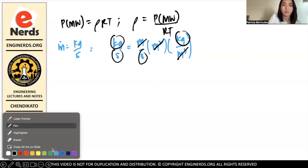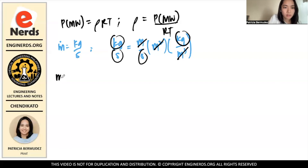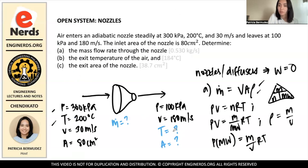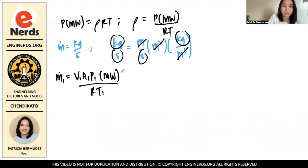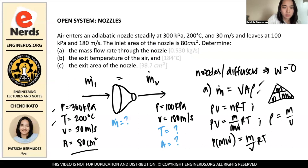Now we substitute to get the mass flow rate. We use the properties at the inlet since the mass flow rate at the inlet equals the mass flow rate at the outlet. So mass flow rate = V1 × A1 × (P1 × molecular weight) / (R × T1).